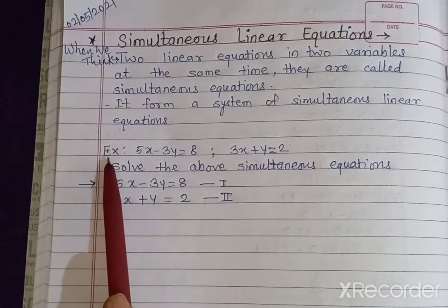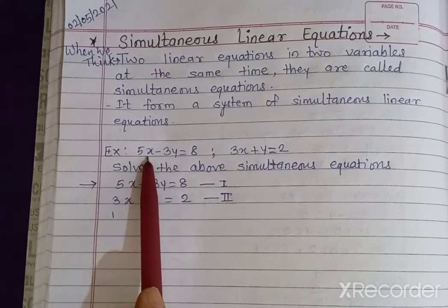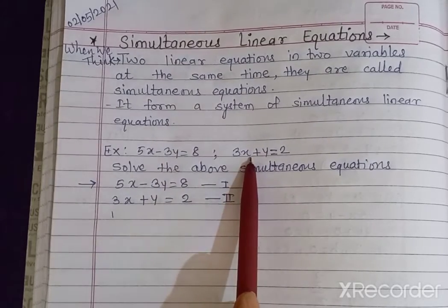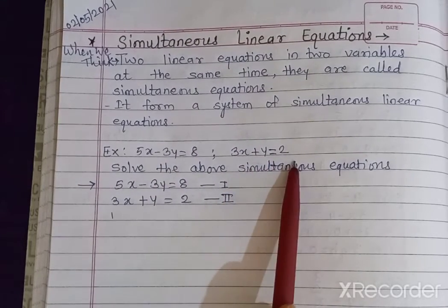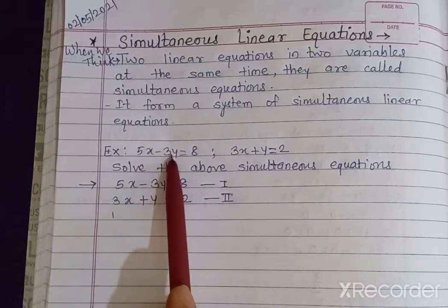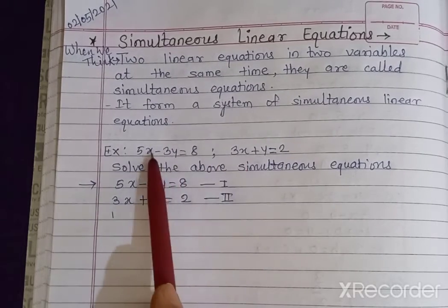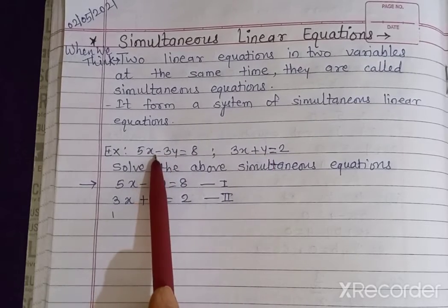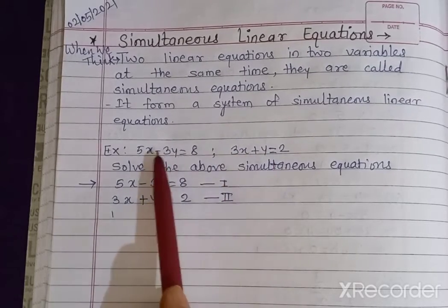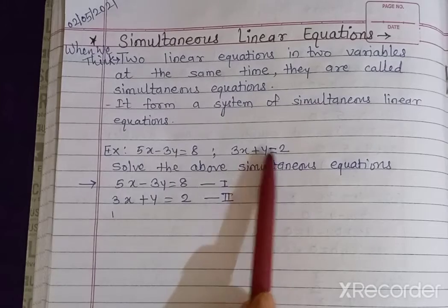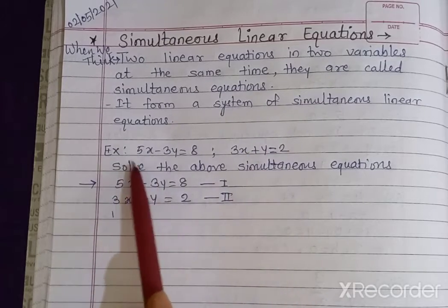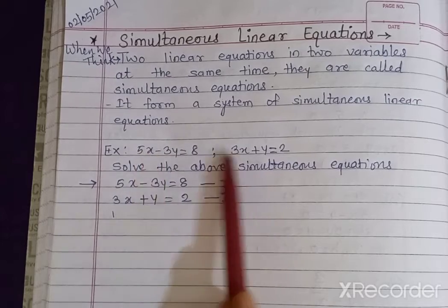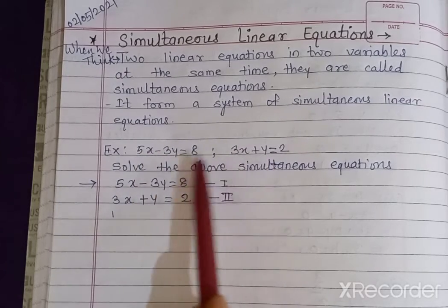Now let us see an example. 5x minus 3y is equal to 8, and 3x plus y is equal to 2. These are two simultaneous equations with the same variables. You can observe that in the first and second equations the variables are the same. When different equations have the same variables, they are called simultaneous equations.